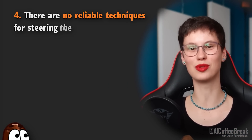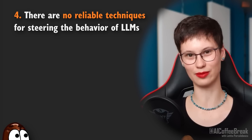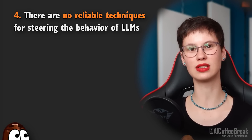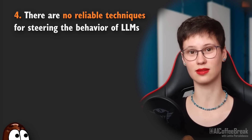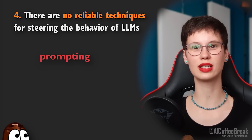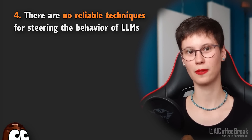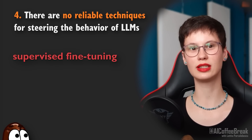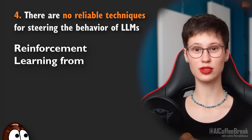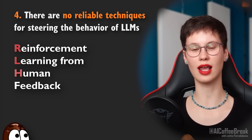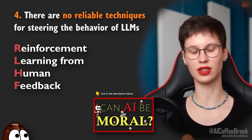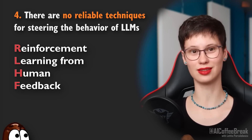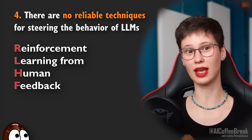It would be great if we had a reliable way to steer LLMs towards producing common sense or true facts — but there are no reliable techniques for steering the behavior of LLMs. There are some ways to influence what the LLM produces after training: one way is prompting, so wording the question such that the right answer becomes more probable. Supervised fine-tuning is further training the model to match high-quality human demonstrations on a task. Then there is reinforcement learning from human feedback, or RLHF — if you are interested, check out our previous videos. In a nutshell, RLHF is puppy training: the model gets a reward for good answers to make it learn good behavior and new tricks. But these three methods still do not make it perfect.